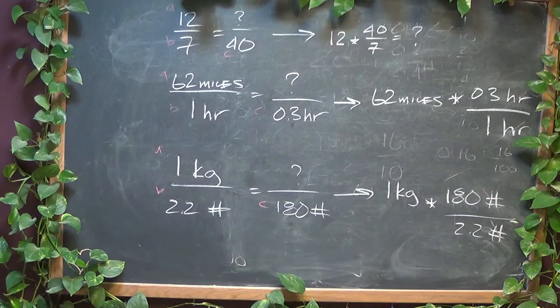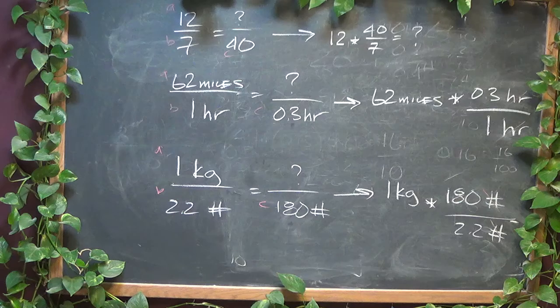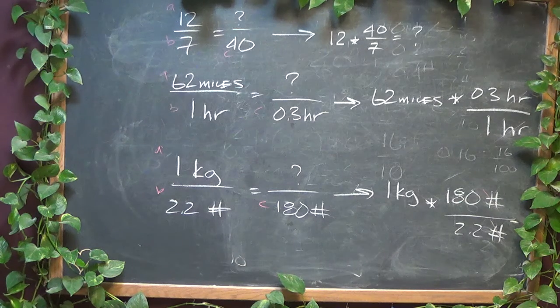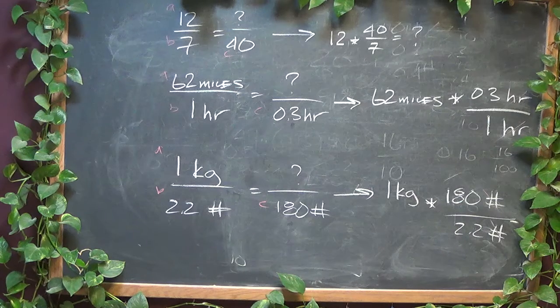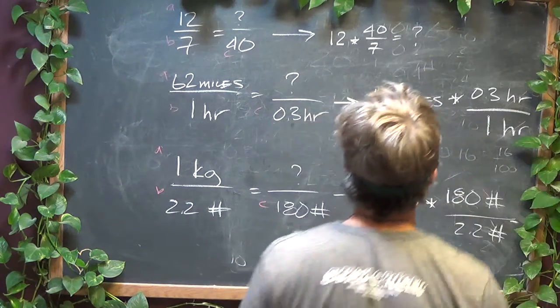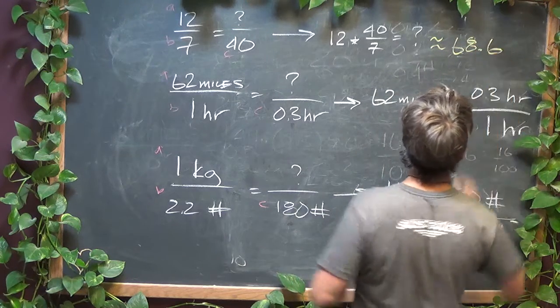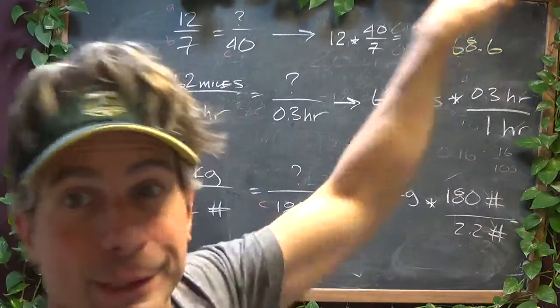All right, let's get some numbers for these. So we have the answers that I'm sure you want. So we've got 12 times 40 over 7. That, I get about 68.6. Okay? No unit. That was just a numerical example. It was just no unit whatsoever.